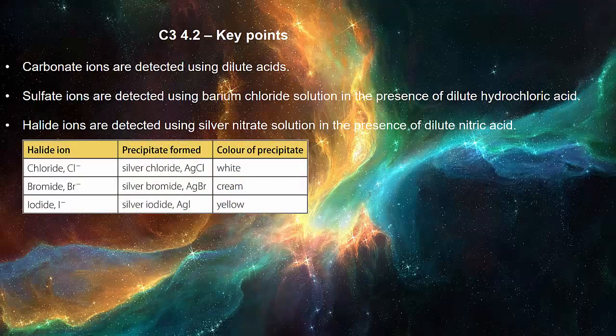The precipitate formed for chloride is silver chloride, the colour of the precipitate is white. For bromide produces precipitate silver bromide and the colour is cream. For iodide produces the precipitate silver iodide and the colour is yellow.